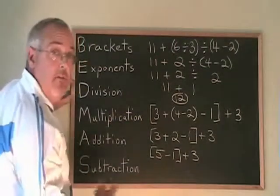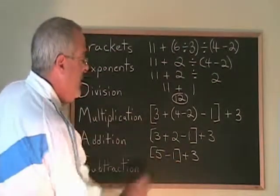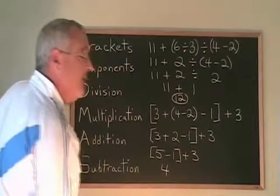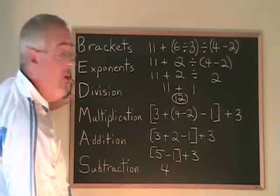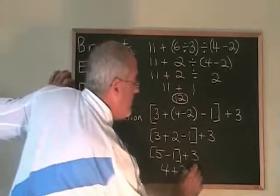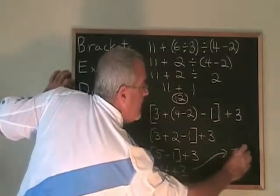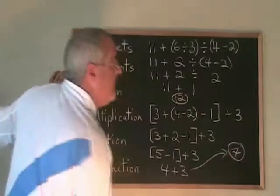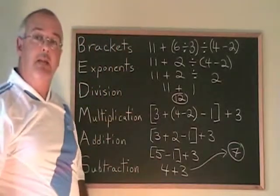Now, the 5 minus 1 in the bracket has to be done before the addition. 5 minus 1 is 4, I write the answer, I don't need the bracket anymore, and I copy down the plus 3. 4 plus 3, of course, is 7. That's my answer. This is how you deal with nested brackets.